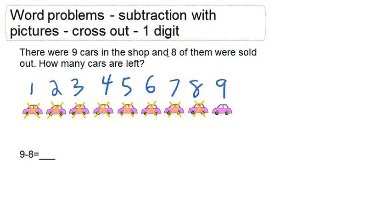So when it says that eight of them were sold out, that's why we're crossing out eight of these cars. Because these cars are no longer being sold in the shop, because they have already been sold.